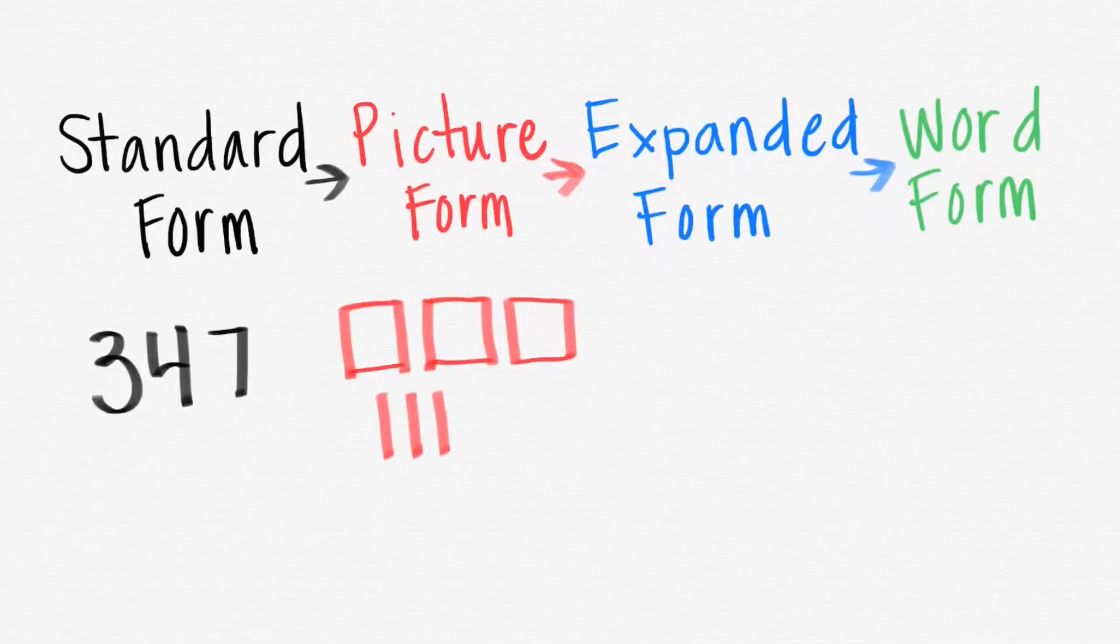We have a four in the tens place, so we need four tens, and we have a seven in the ones place, so we need seven ones.